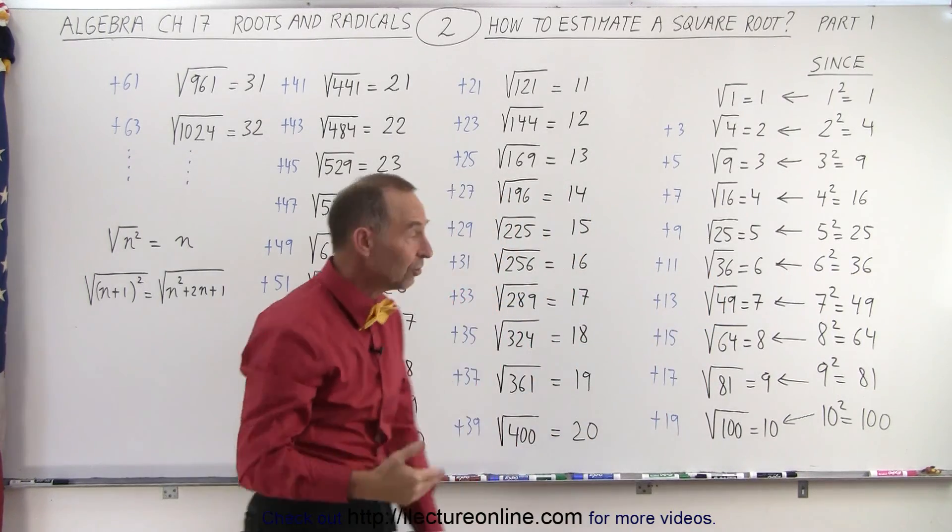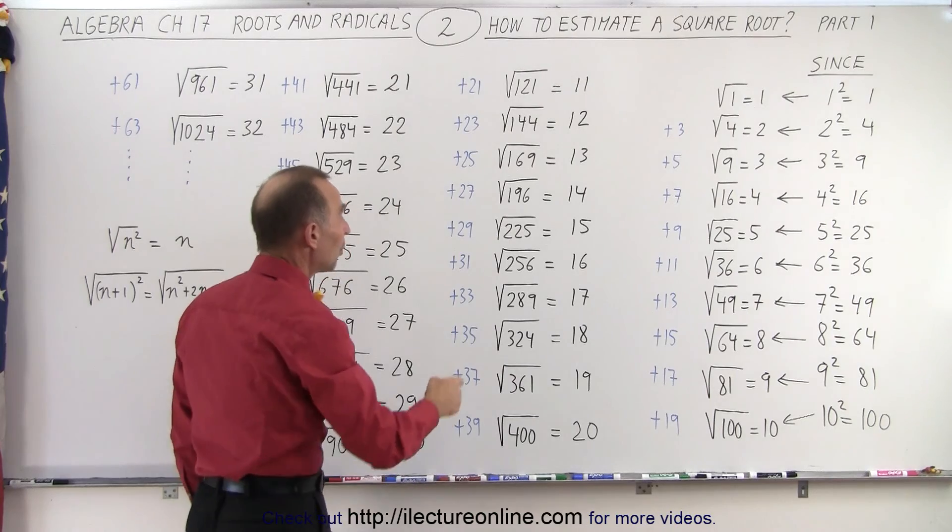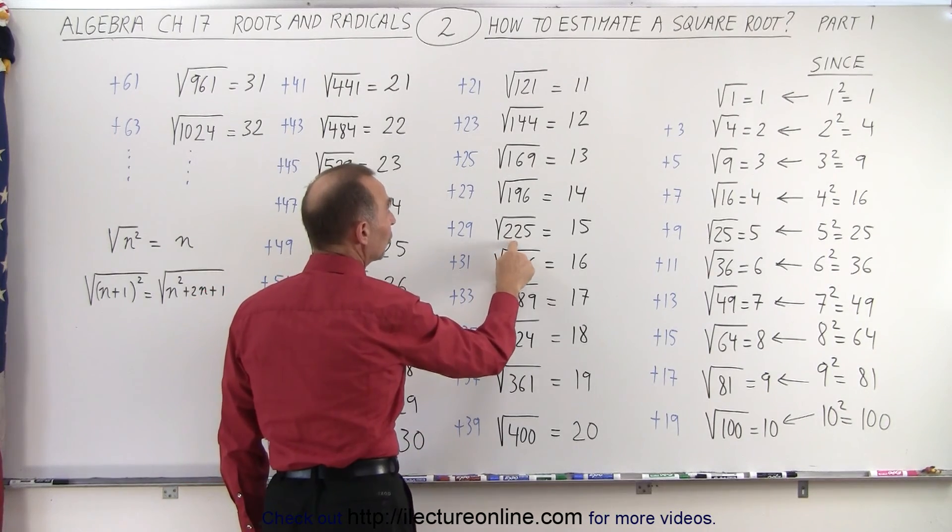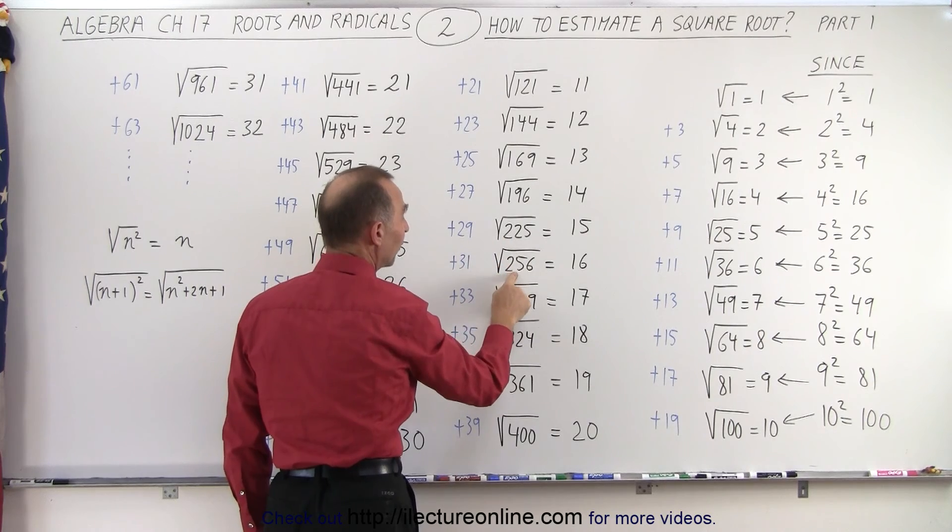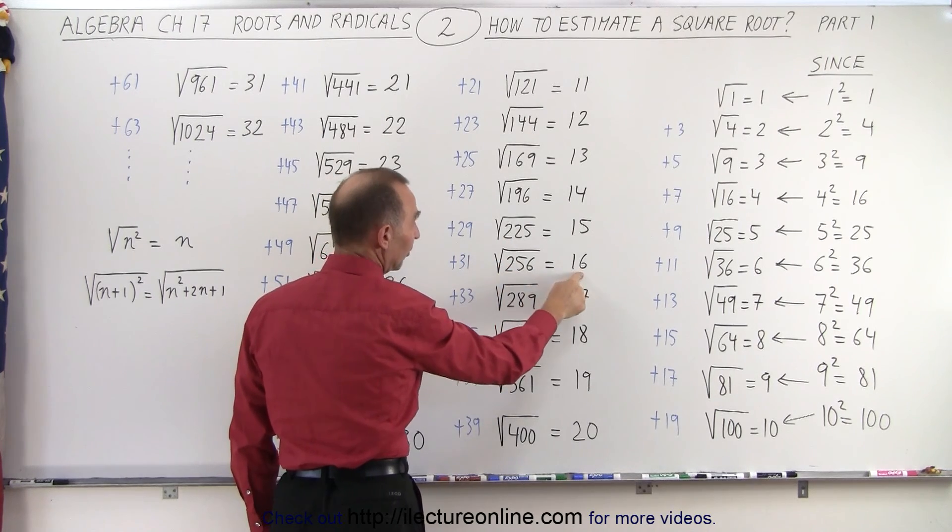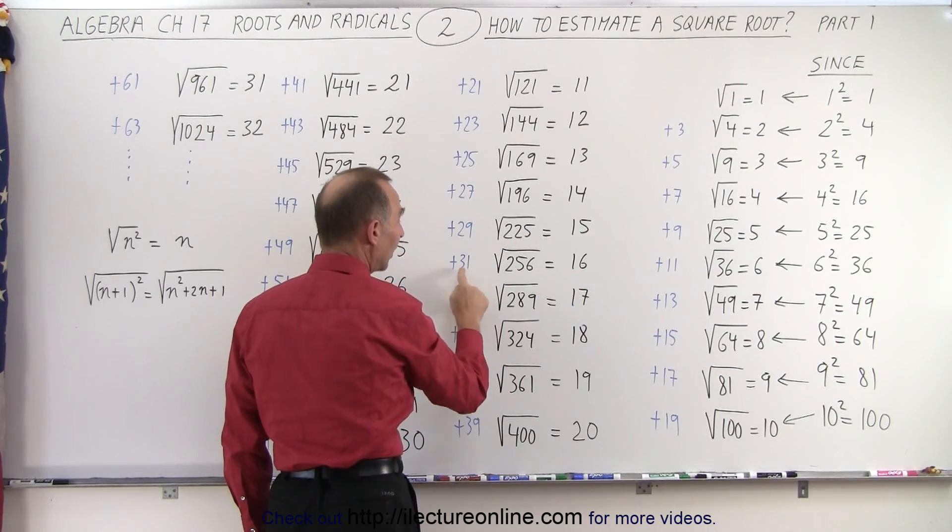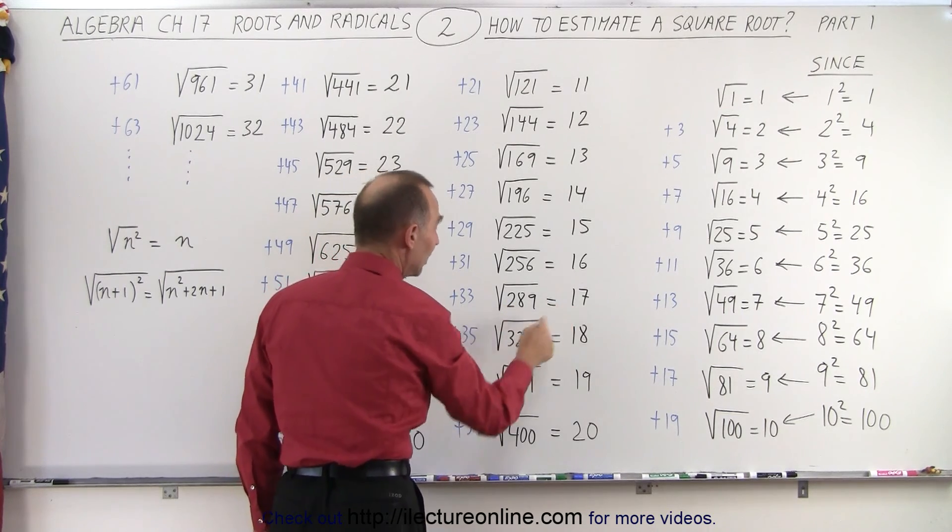And the pattern simply continues. For example, we note that the square root of 225 is 15. Now if we add 29 to that, we get 256, which is the square root of 16. If we add 31 to that, we get 289, and that's the square root of 17.